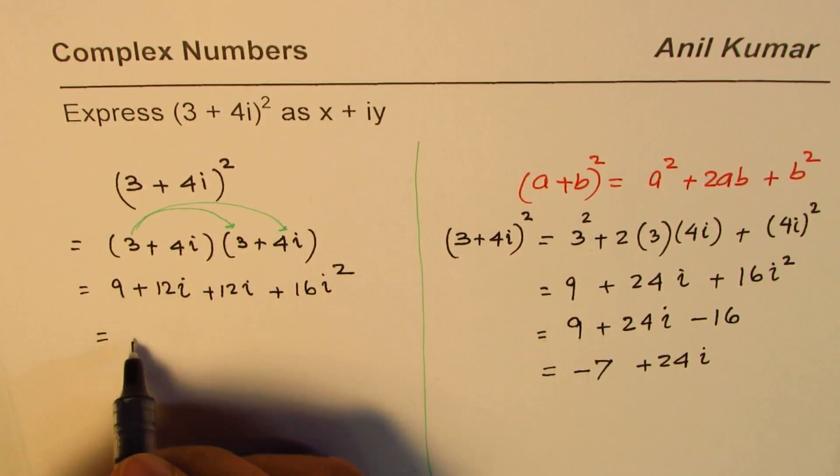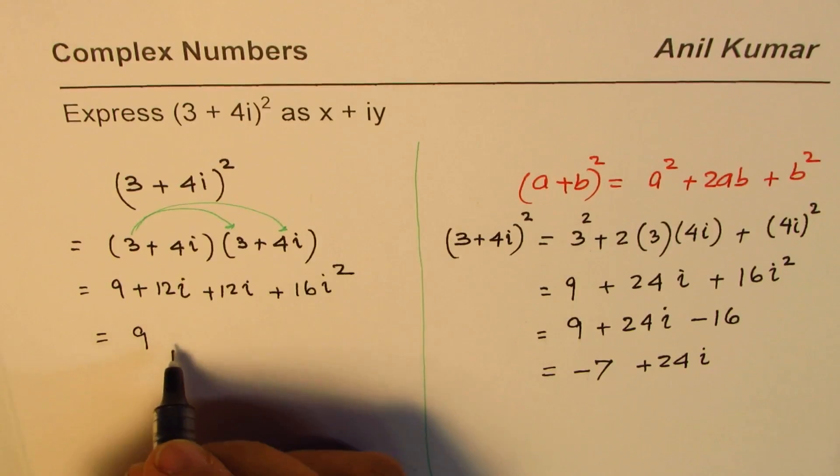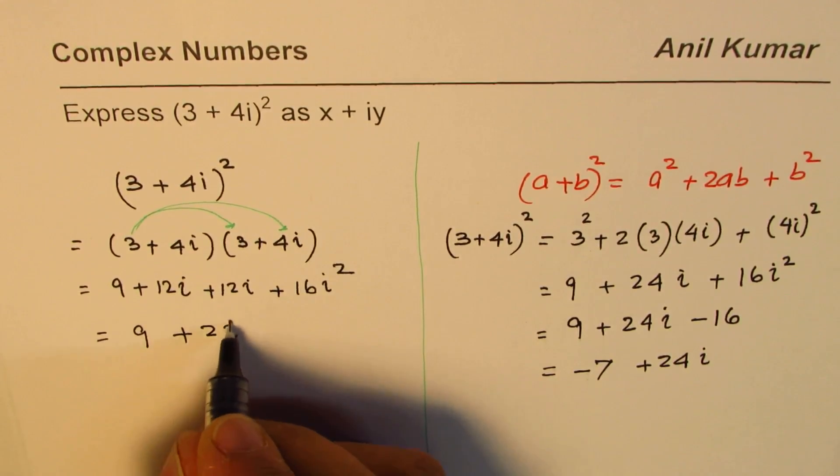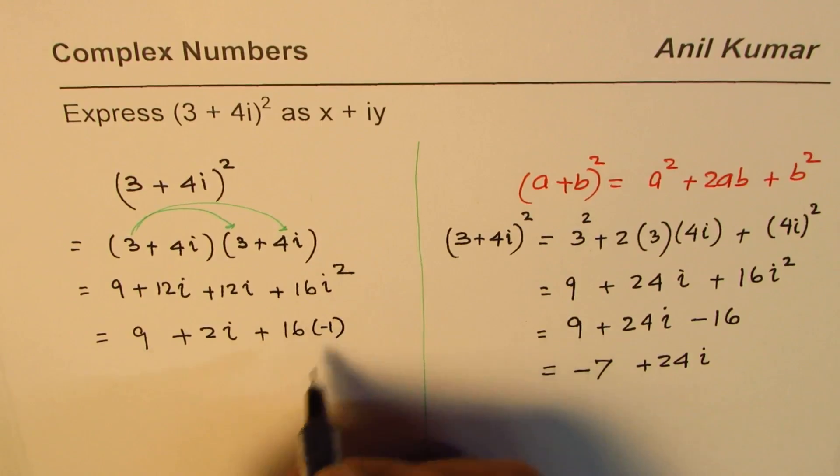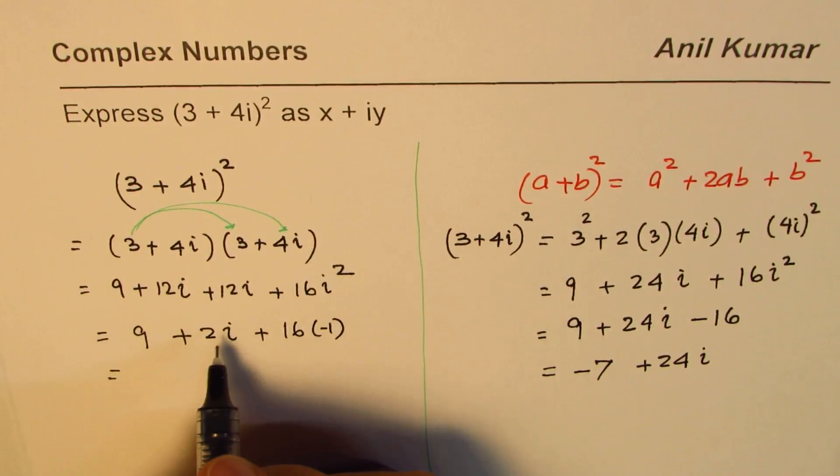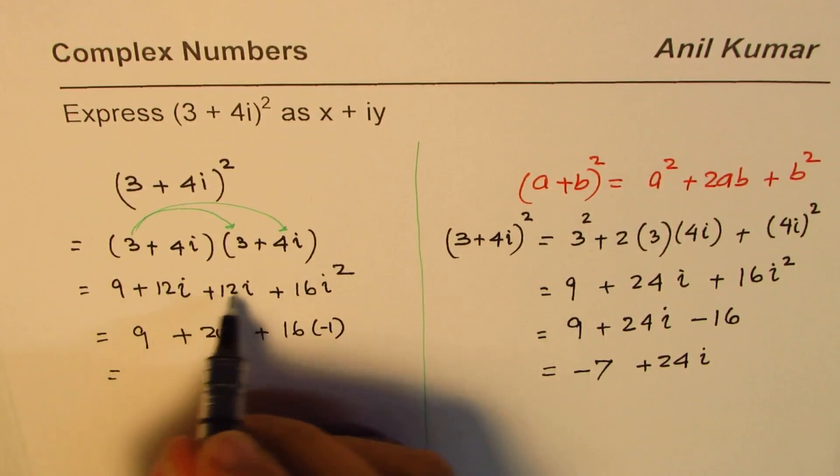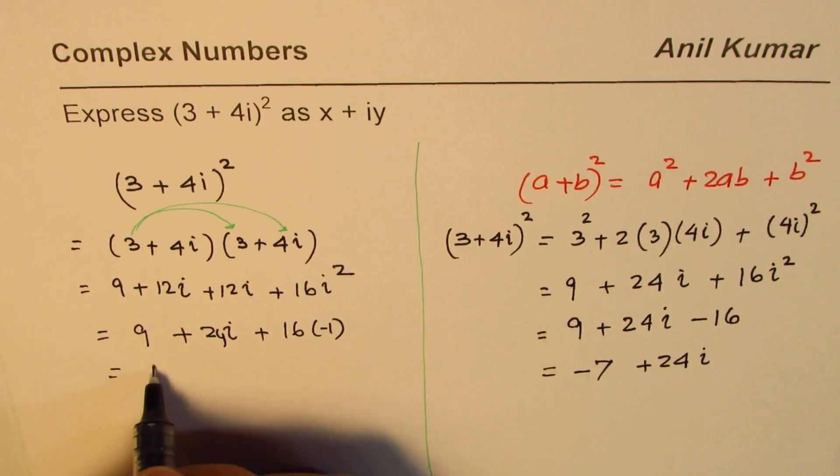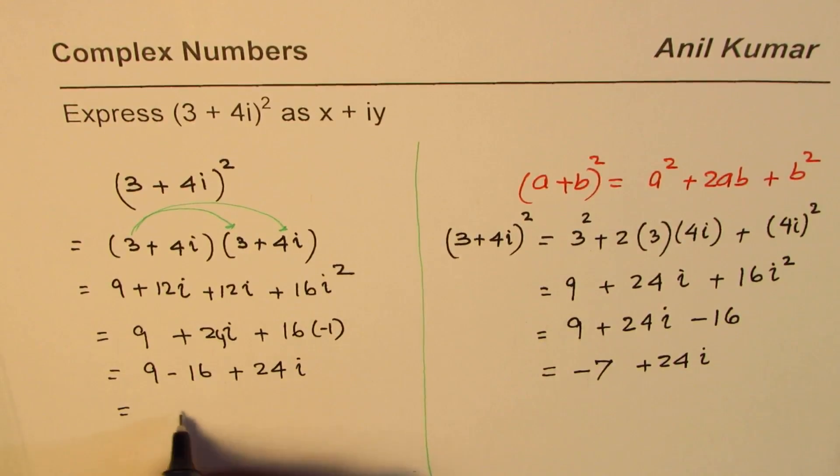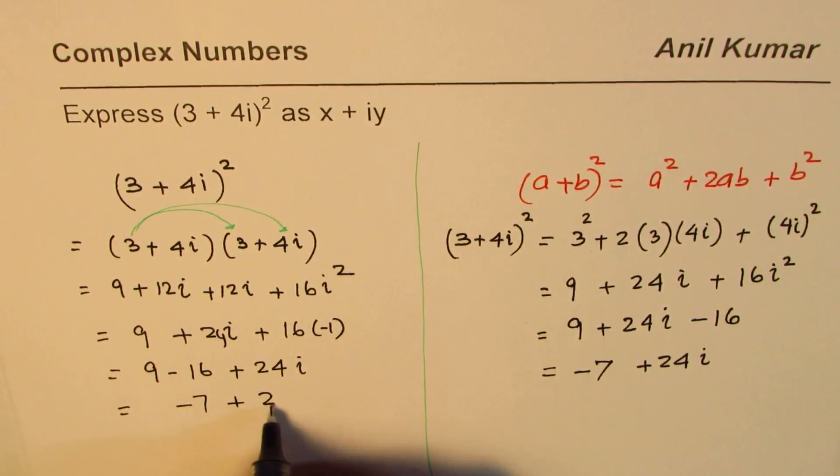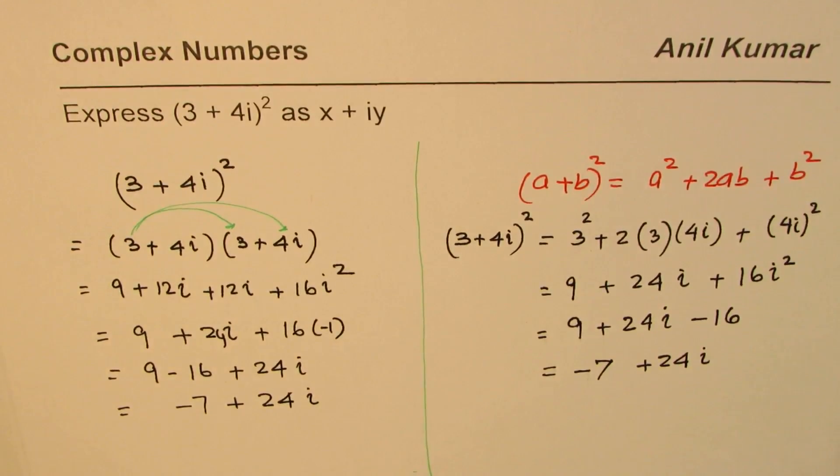Now 9, 12i plus 12i is 24i. We know i square is minus 1. So what we get here is 9 minus 16 plus 24i. And 9 minus 16 is minus 7 plus 24i. So it is exactly the same answer you could do using the formula.